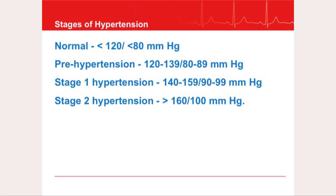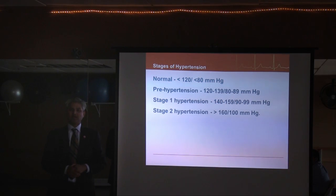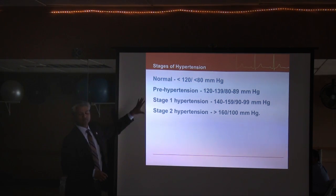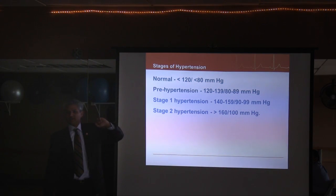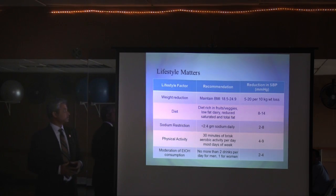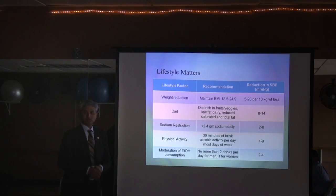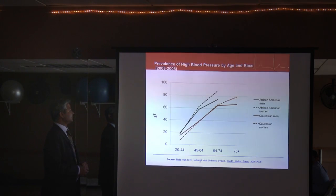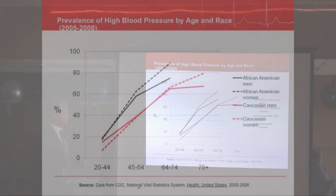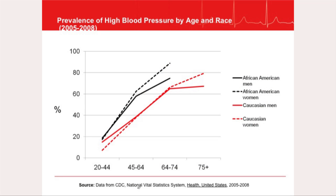Pre-hypertension — from 120 to 140 on top and 80 to 89 on the bottom — is the stage where you still have tools to prevent full hypertension. Stage one hypertension is up to 160 on top; stage two is over 160. Lifestyle modifications can lower blood pressure: weight loss, dietary changes can reduce it by up to 15 points, sodium restriction by 10 points, physical activity, and reducing alcohol consumption. Blood pressure prevalence increases with age across all racial groups.